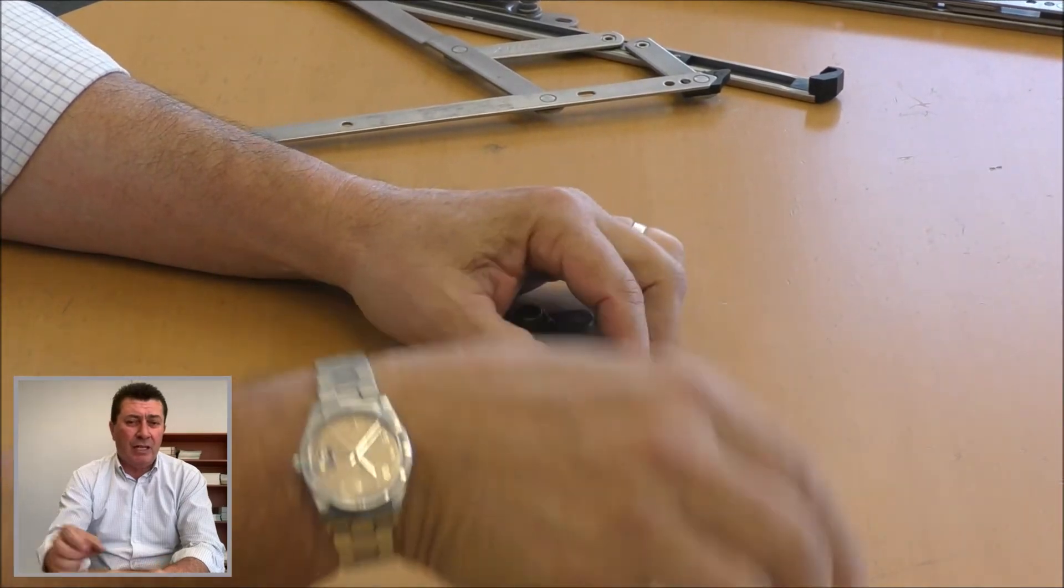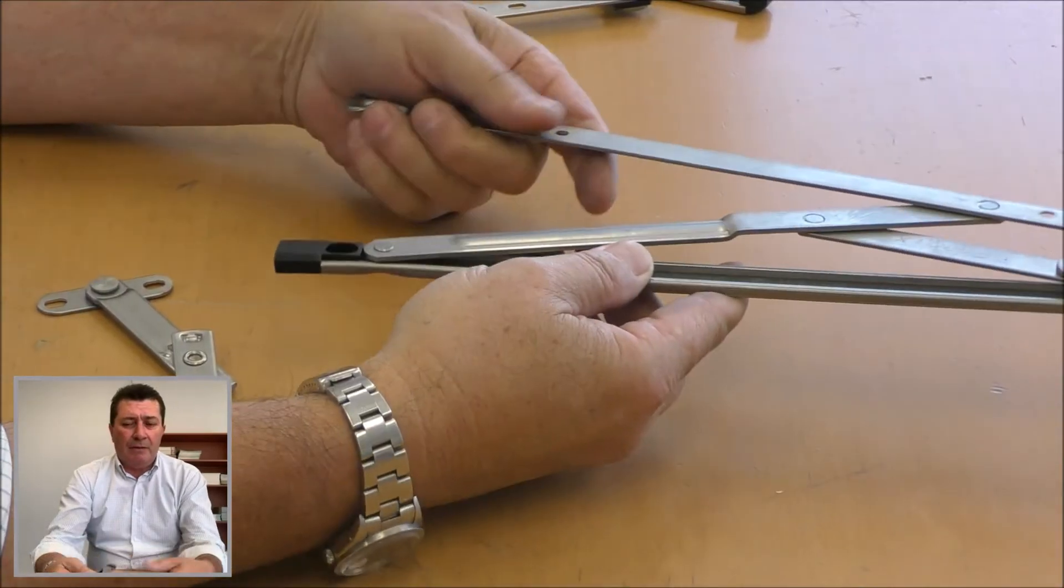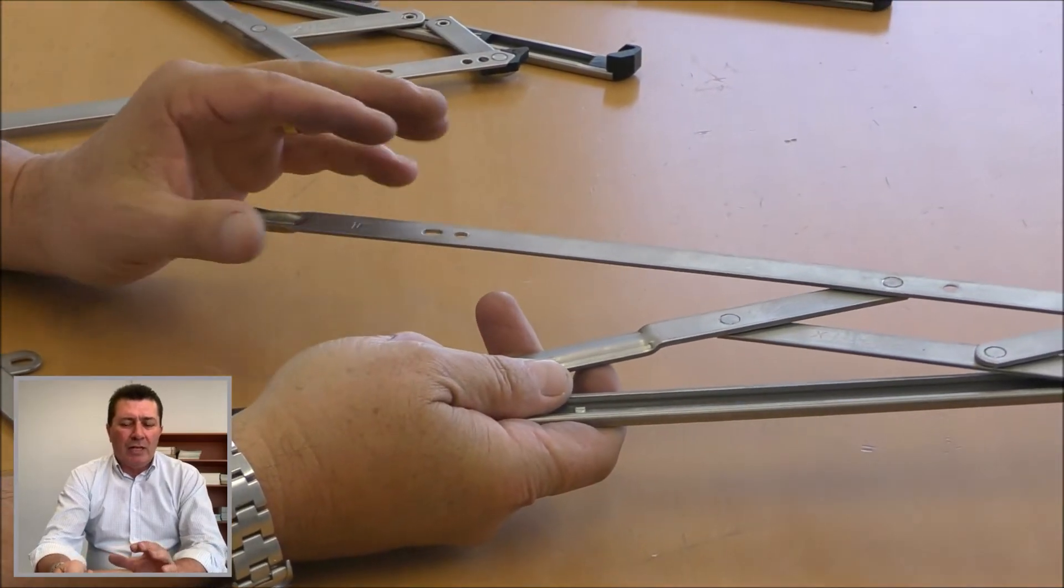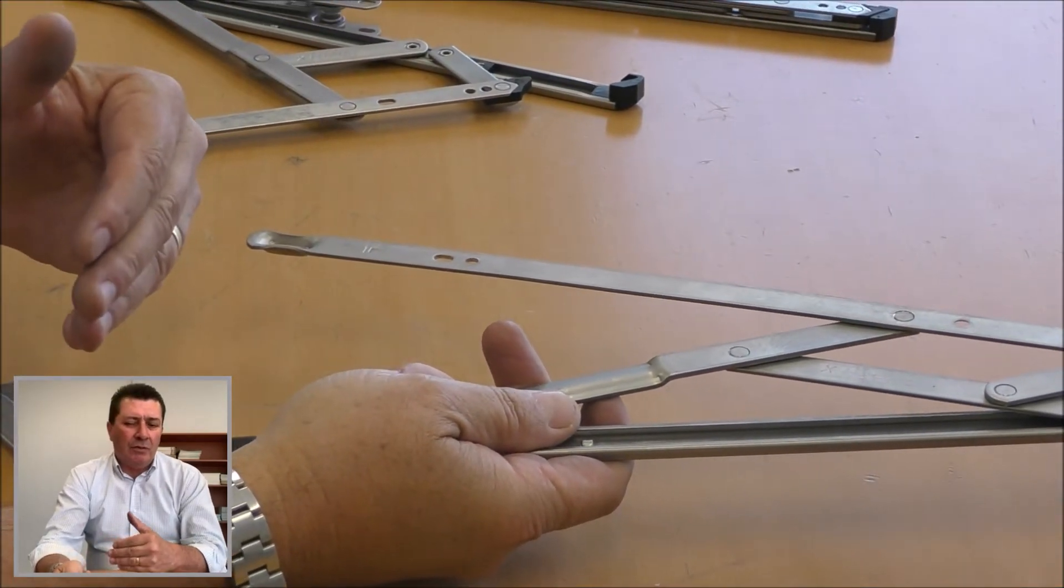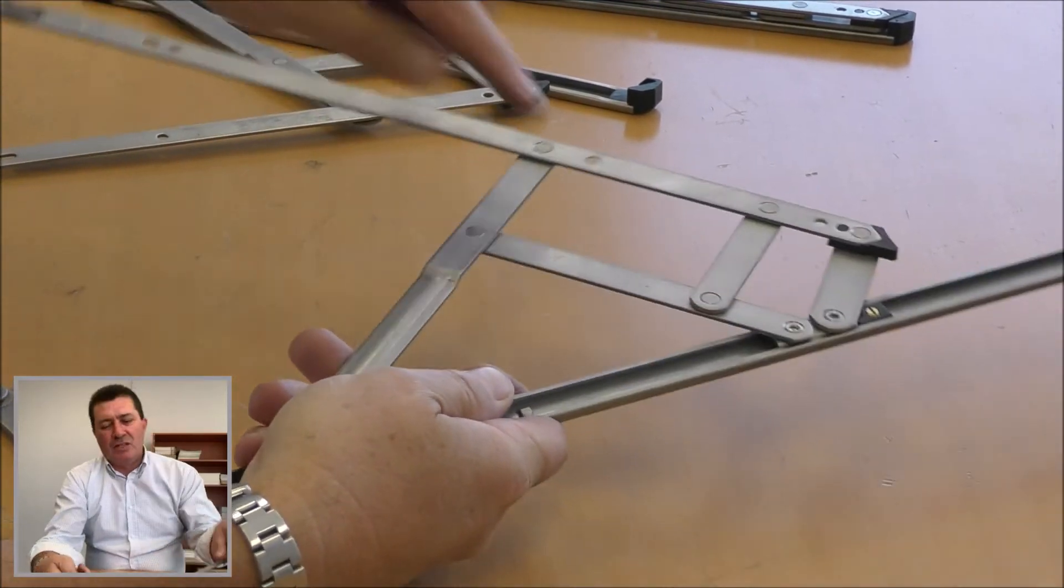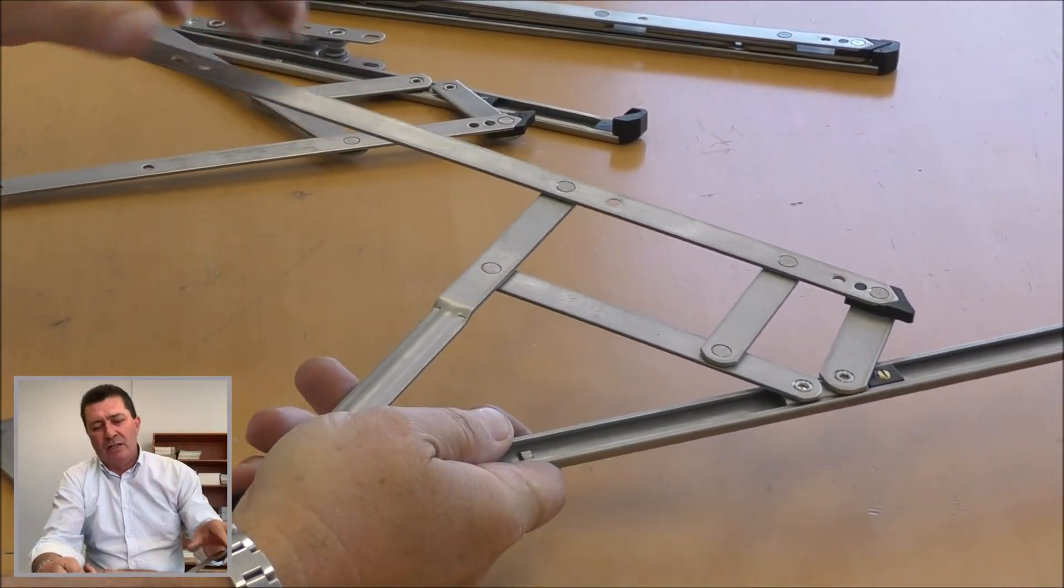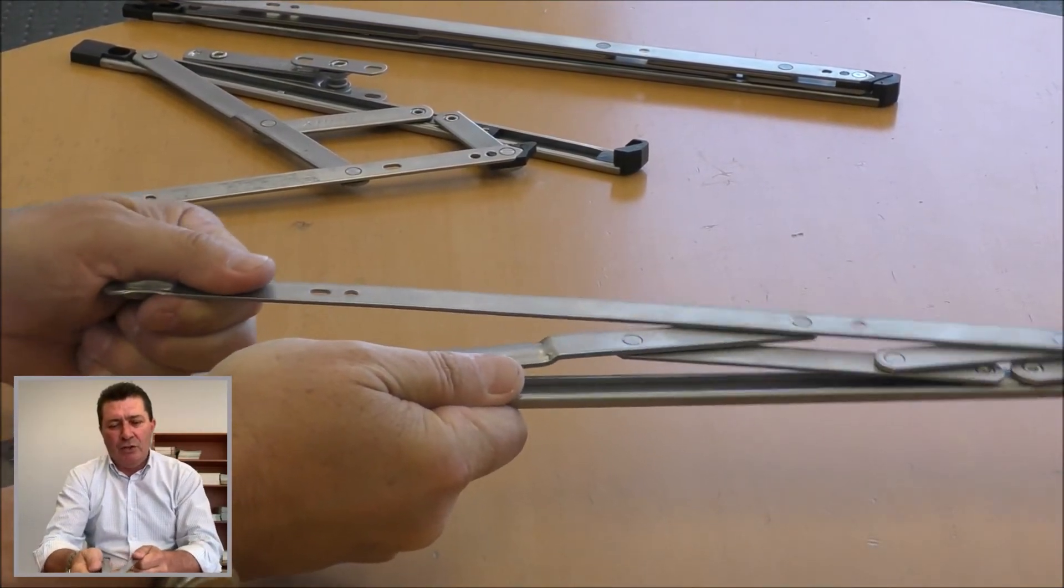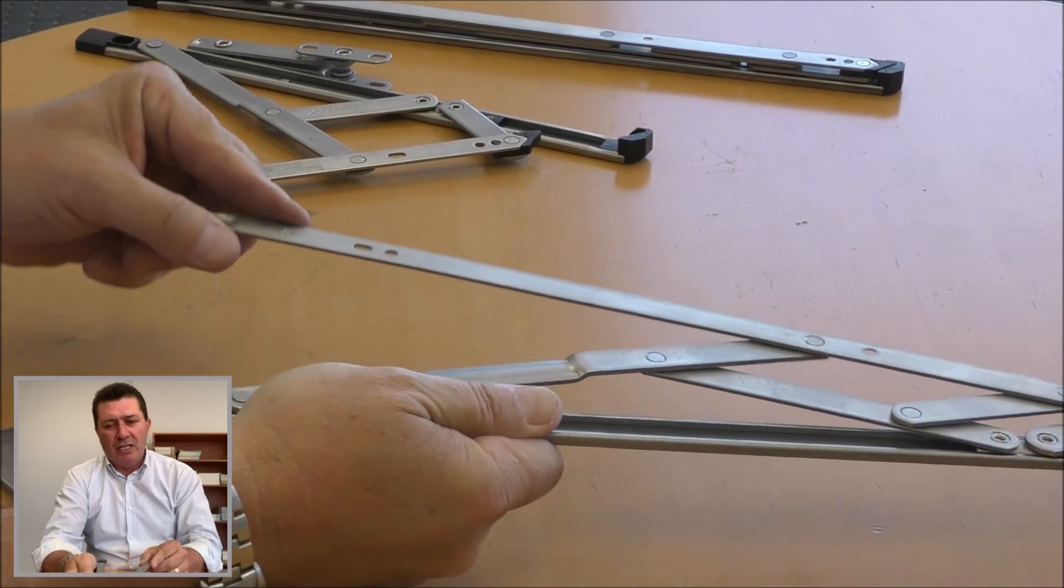The issue with a four bar friction stay or an awning stay is the friction doesn't work or come into being until after the sash has been opened about 100 mil. Because of the slide block configuration, at about 100 mil the sash can be loose and will want to self-close. As the window opens,